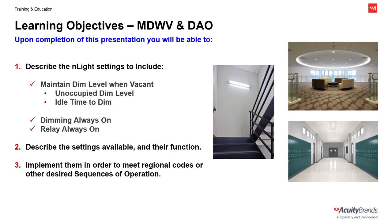At the end of this module, you'll be able to describe and understand these settings, as well as how to implement them in your programming in order to meet regional codes or other specified sequences of operation. You'll also notice that when trying to achieve this operation, it's important to identify which settings can be permanently changed, and which settings may only need to be temporarily changed through a profile scene that can be run on demand or on a time schedule.